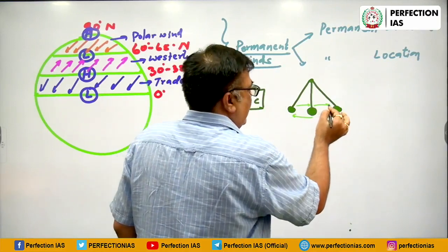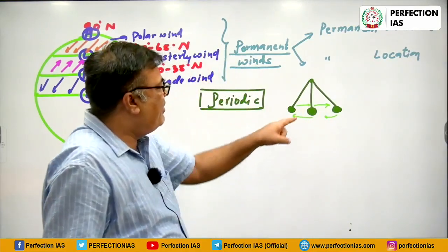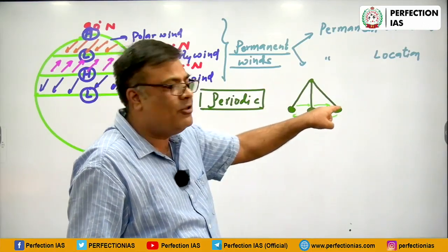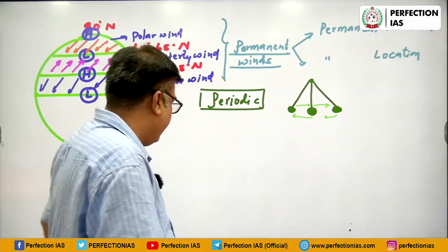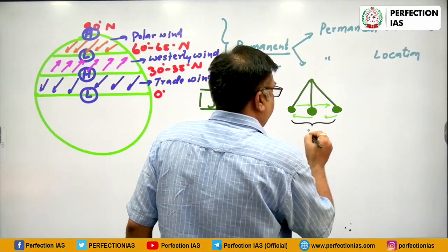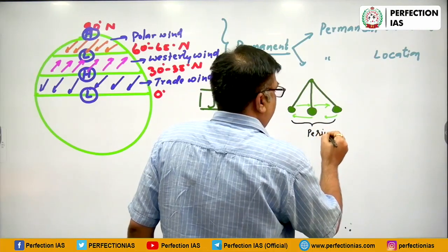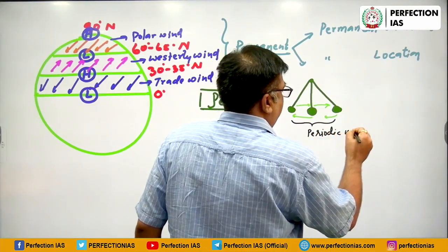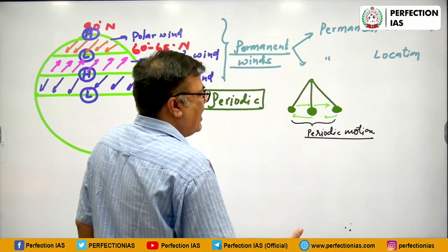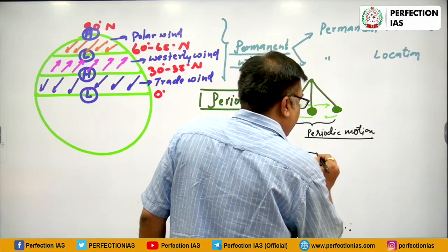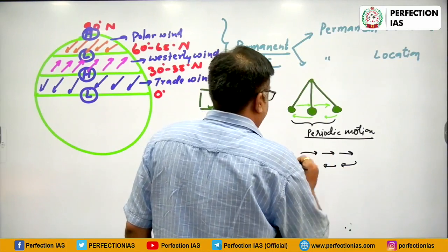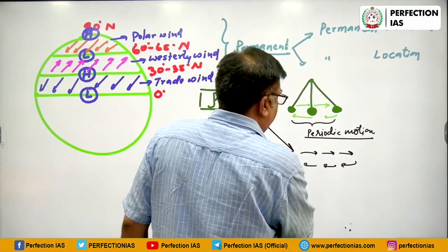Similarly, when this periodic motion is applied to wind — a wind blows once in one direction and then the other way — this type of wind we call periodic wind. I hope it is clear. But then here is the question: why does this wind start changing its direction from one side to the other? Obviously, this whole thing depends on the pressure — when the wind is going here, here is the high to low, and when it is going the other way, the pressure configuration reverses.